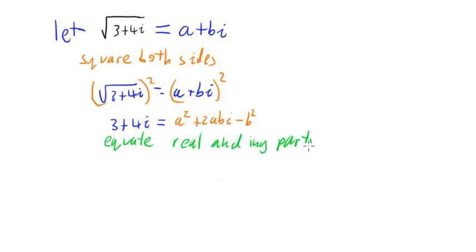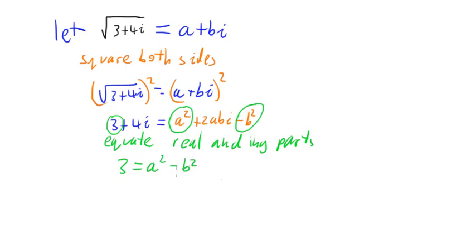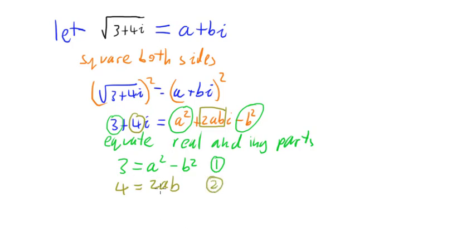We equate the real and imaginary components of the equation because the real parts match and the imaginary parts match. So our real parts give us: 3 equals a squared take b squared. Our imaginary parts give us: 4 equals 2ab. This gives us two simultaneous equations, which I'll call equation 1 and equation 2, and I can now solve these for a and b, then substitute them back into the standard form to get our answer.